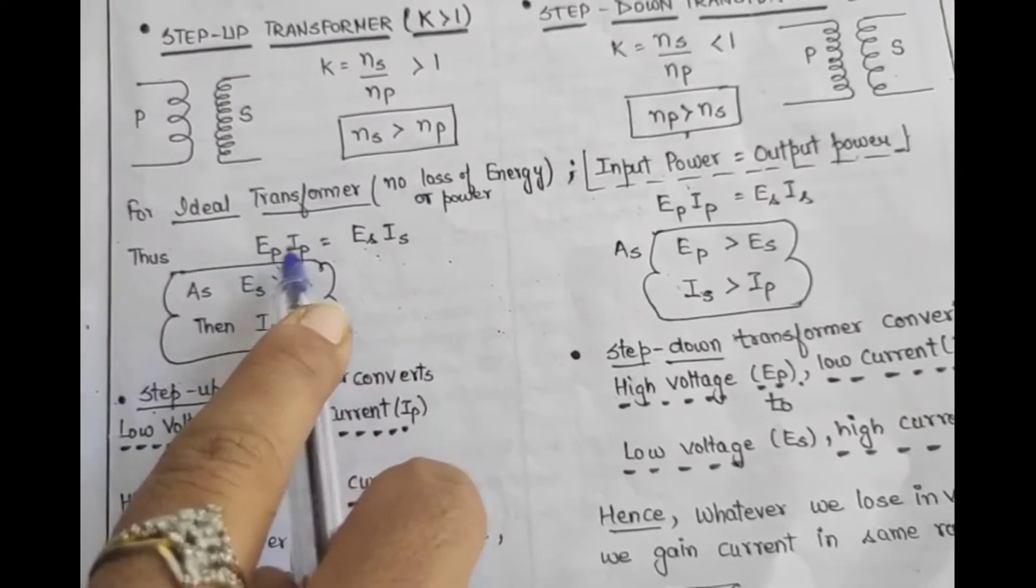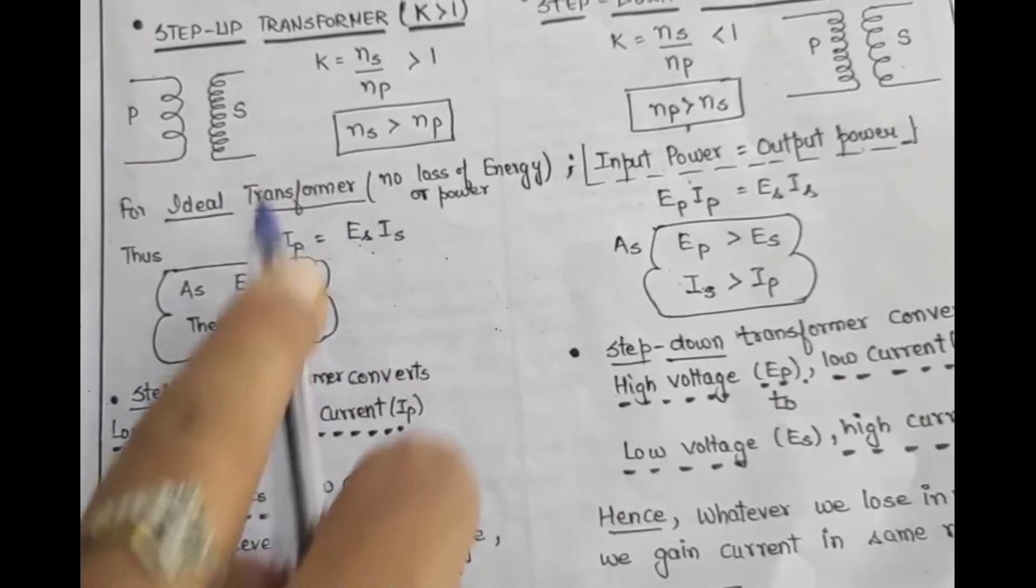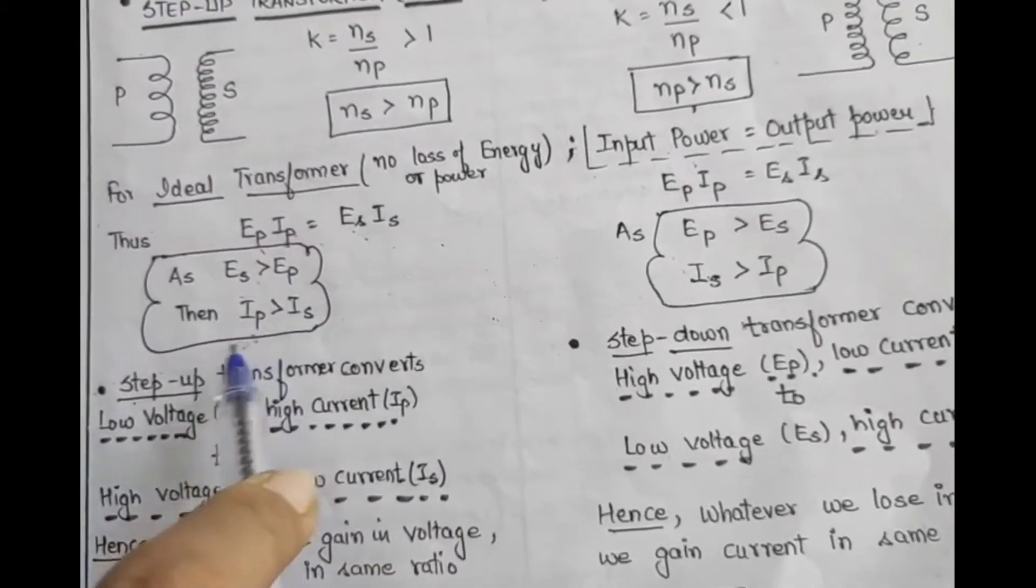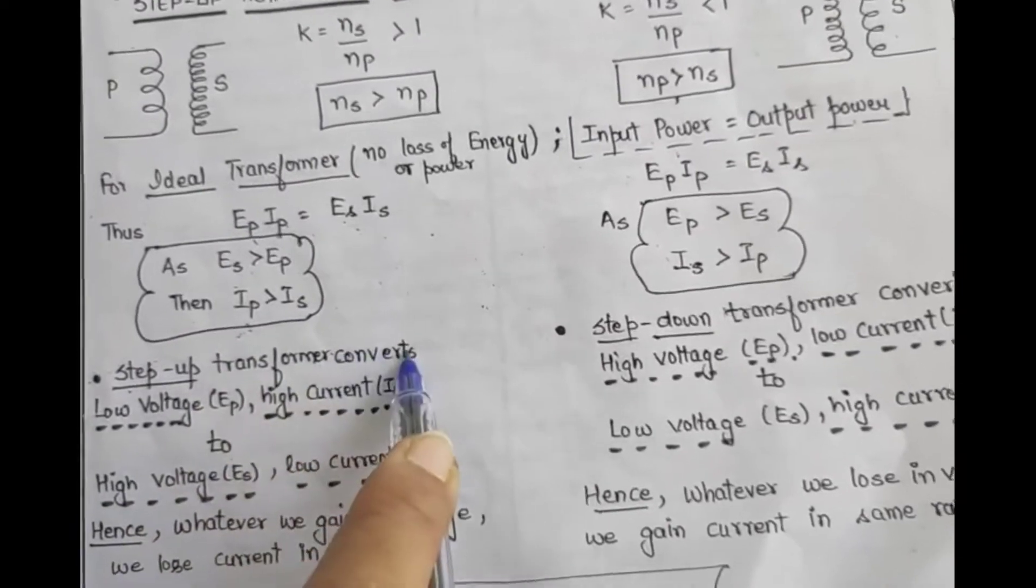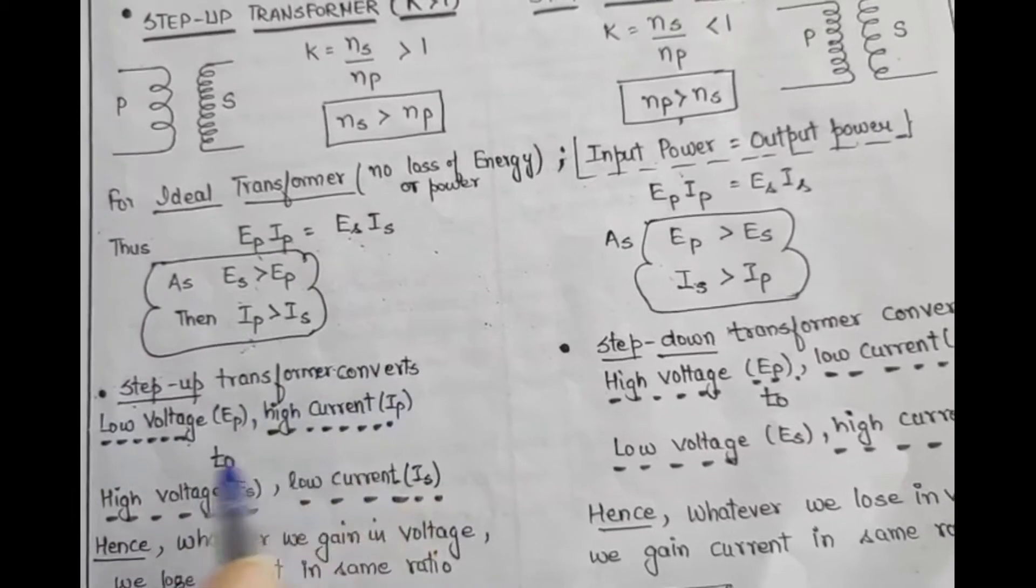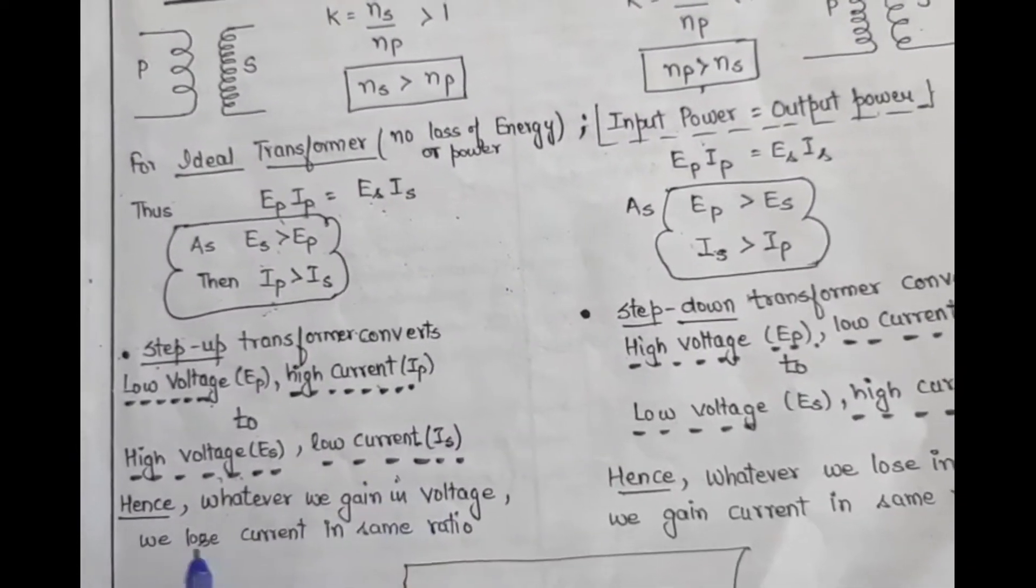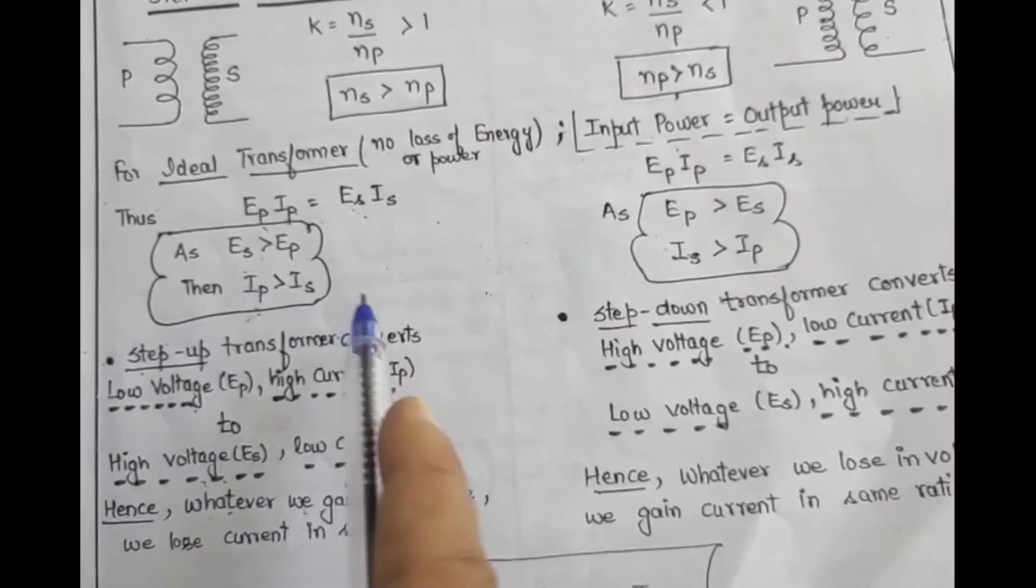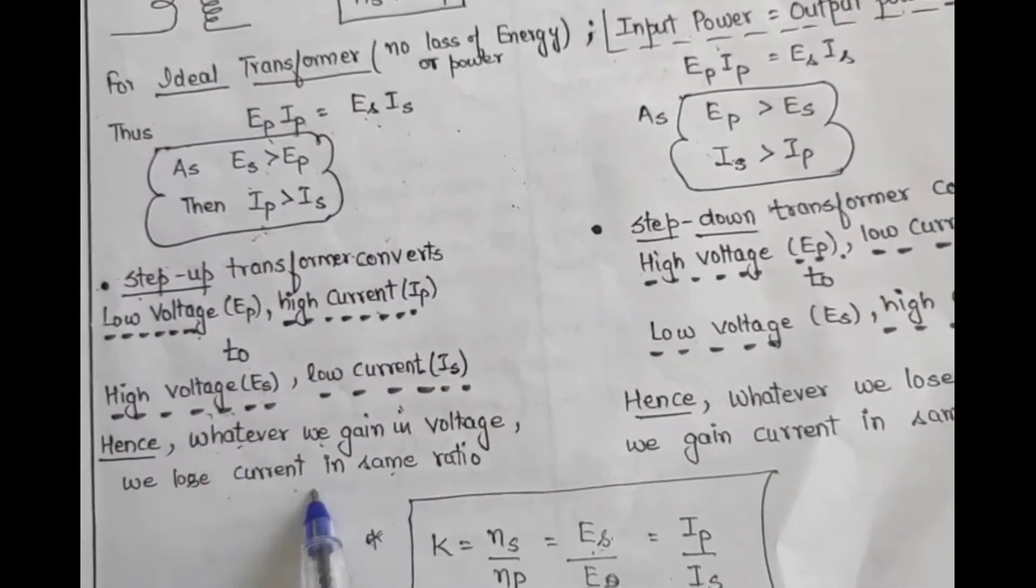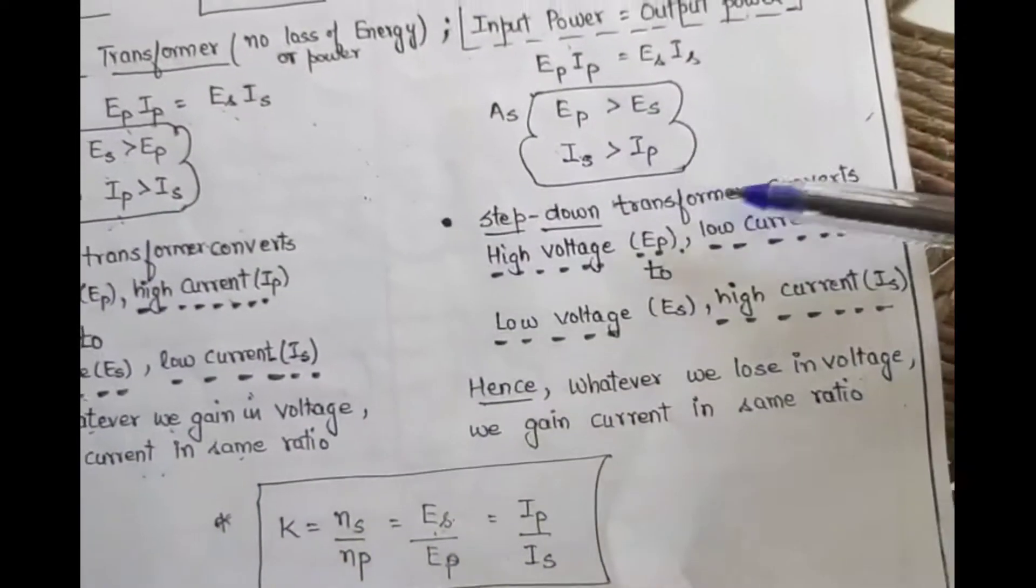Now since in step-up, voltage increases, which one is bigger? ES is bigger than EP. But this equality also has to hold for ideal transformer. So that means IP, what will it be? Look, EP is small, so IP will be large, only then will this equality hold. This means when in step-up transformer voltage is increasing, then current is decreasing. That's why it is written that step-up transformer converts low voltage to high, and converts high current to low simultaneously. So whatever we gain in voltage, in the same proportion, current decreases. So gain will be in voltage, loss will be in current.